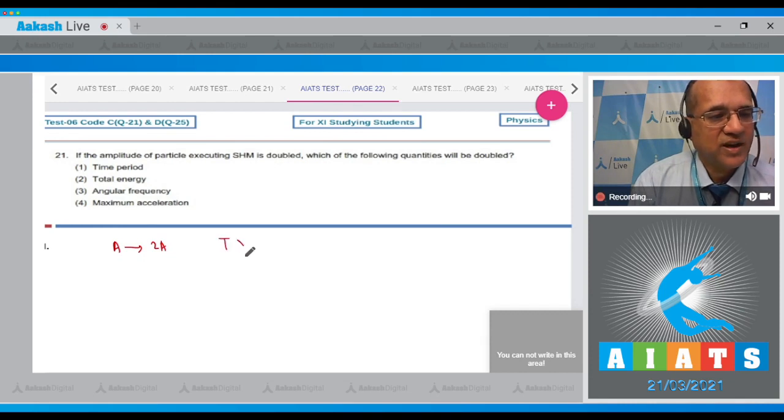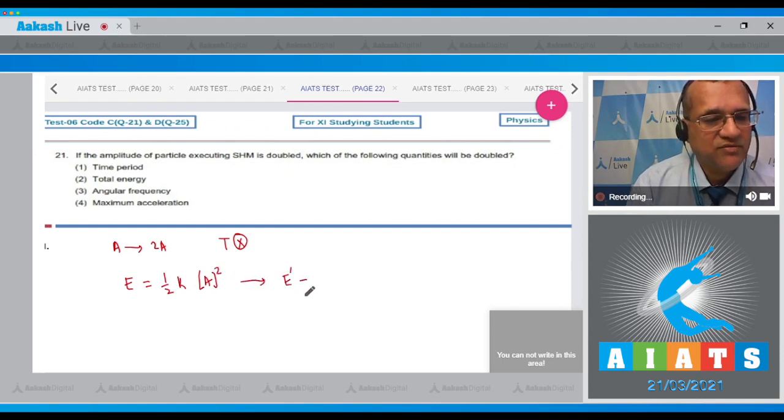You know that time period has no effect, so it remains the same. And total energy - that is equal to 1/2 times a constant times a squared. So when this is doubled, the new energy will become 4 times the initial energy.